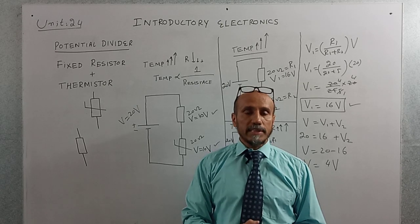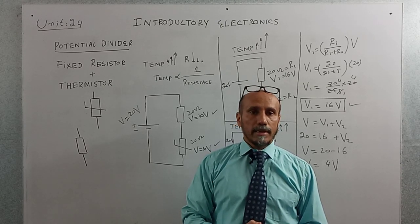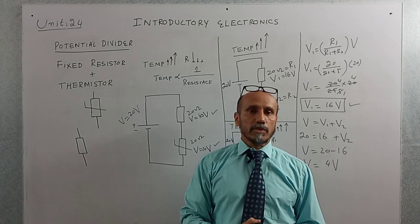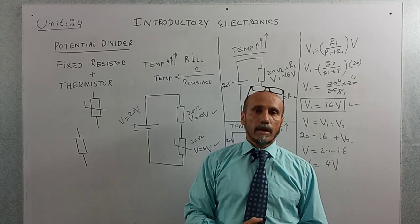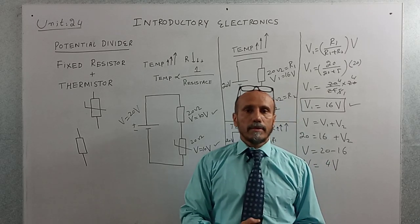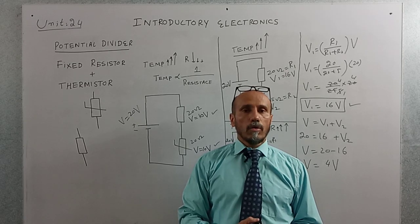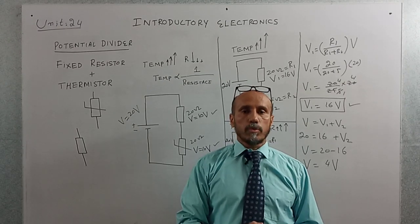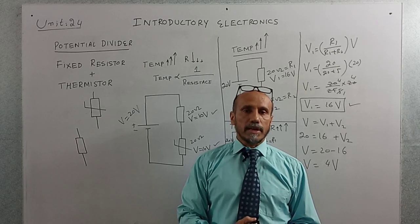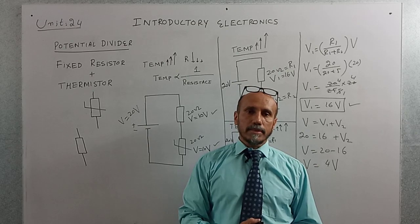In a fixed resistor, temperature and resistance are directly proportional. But in a thermistor, resistance and temperature are inversely proportional — when temperature increases, resistance decreases, and when temperature decreases, resistance increases. I hope this part on thermistor-based potential dividers has made the concept clear. Thank you very much.